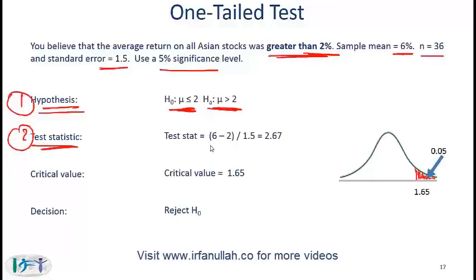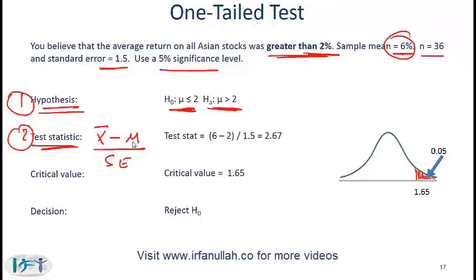The test statistic uses the same formula: x-bar minus the hypothesized value, divided by the standard error. x-bar is 6, mu-naught is now 2 (in the previous example it was 0), divided by the standard error of 1.5. So the test statistic is 2.67.